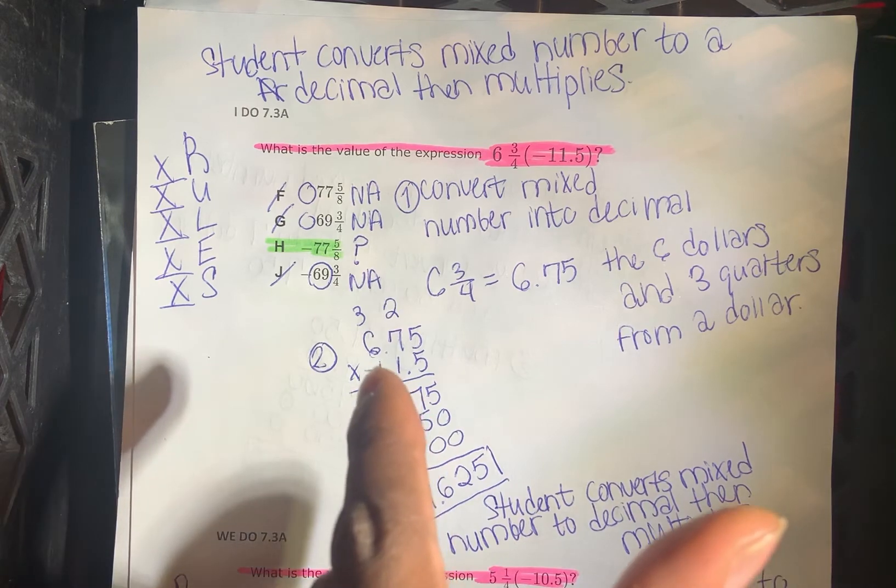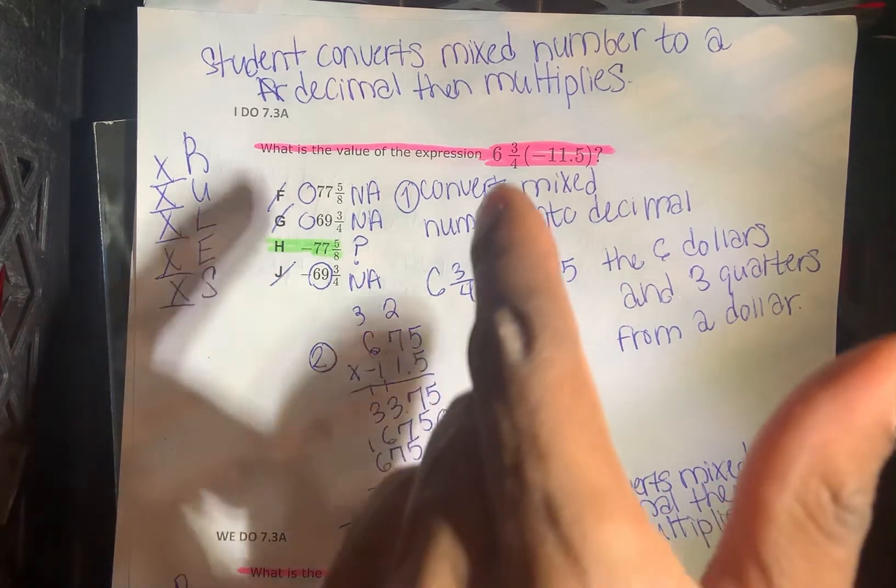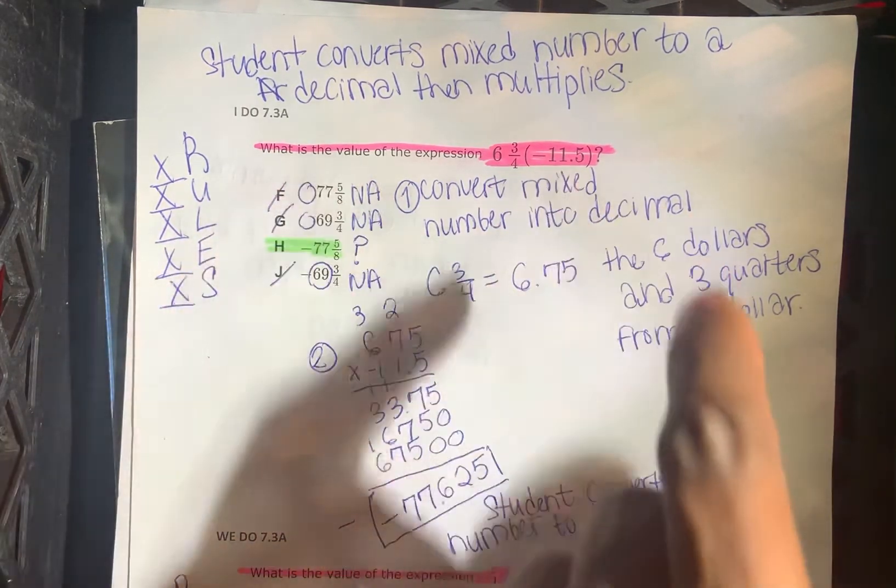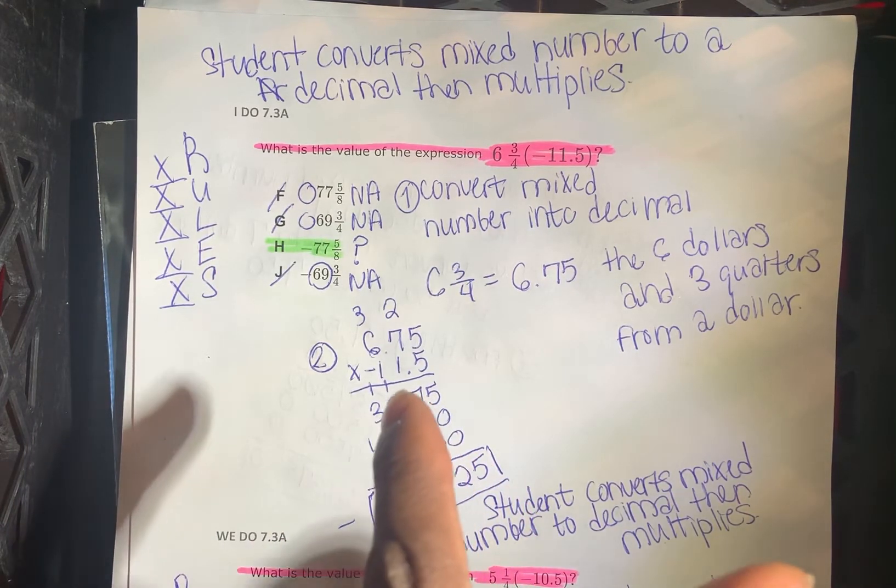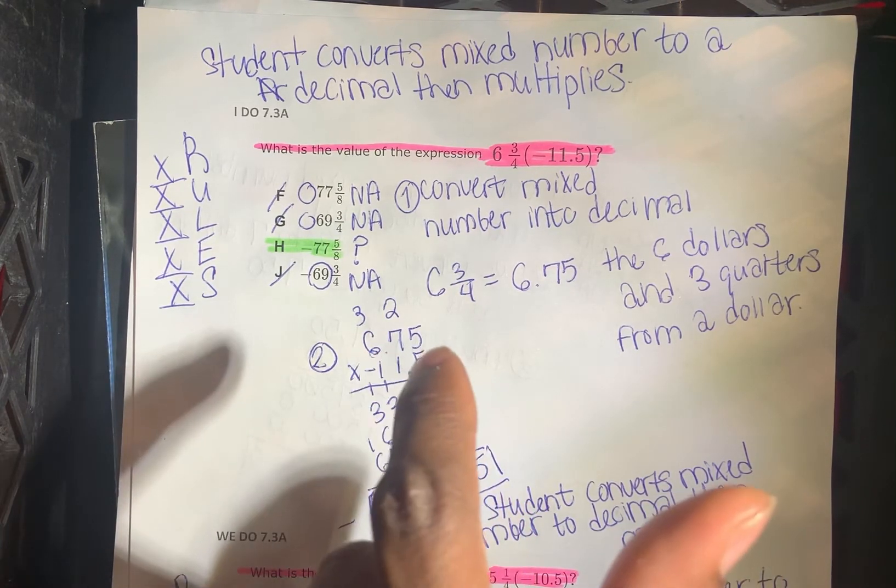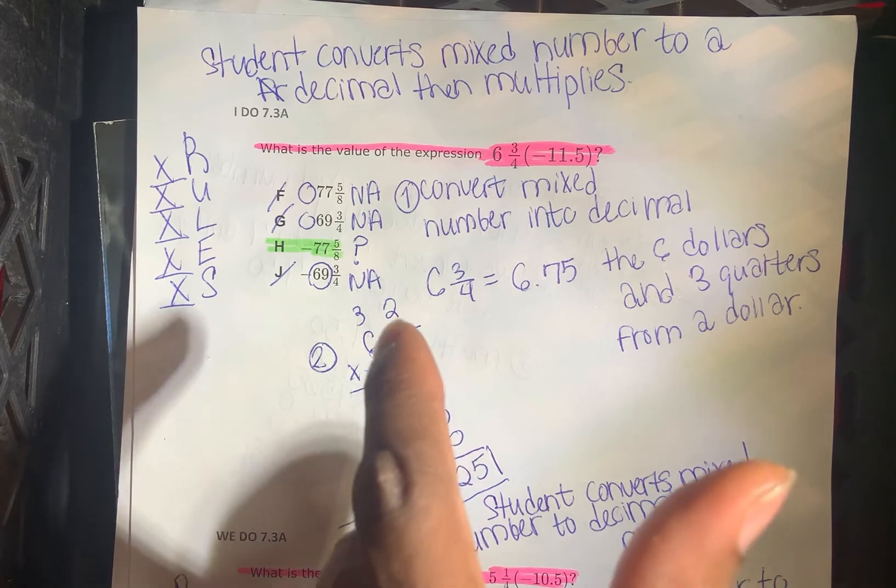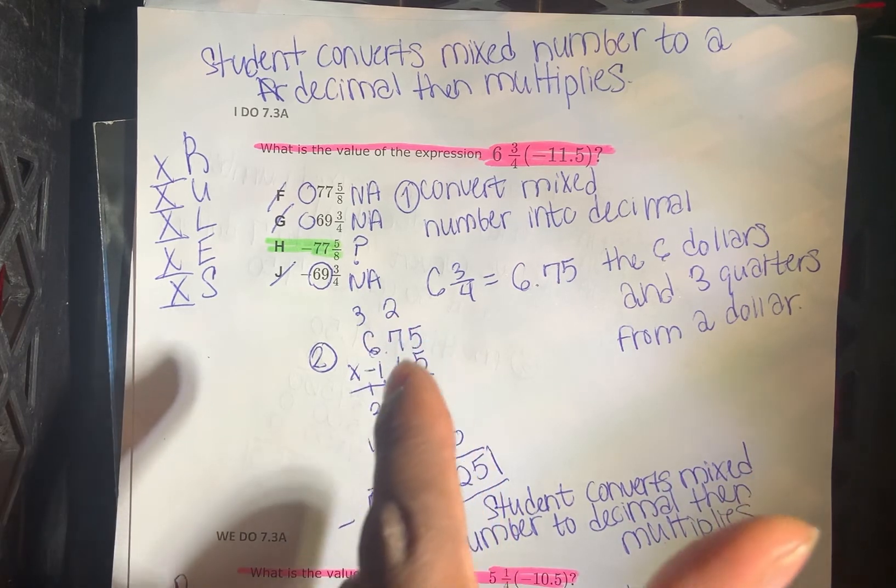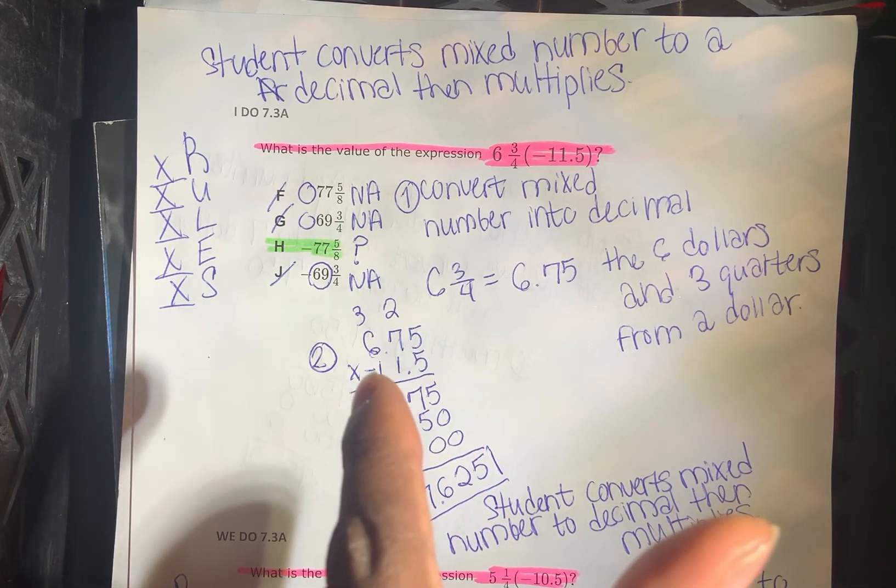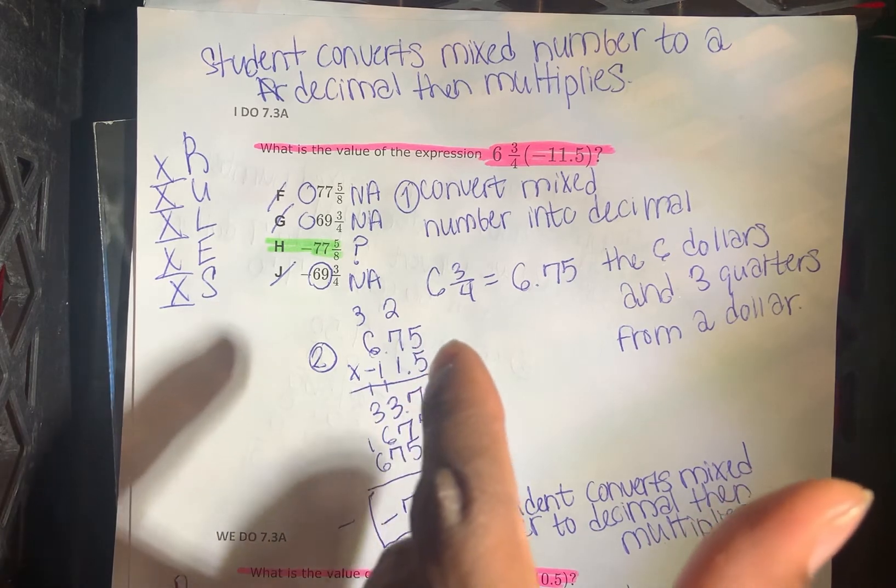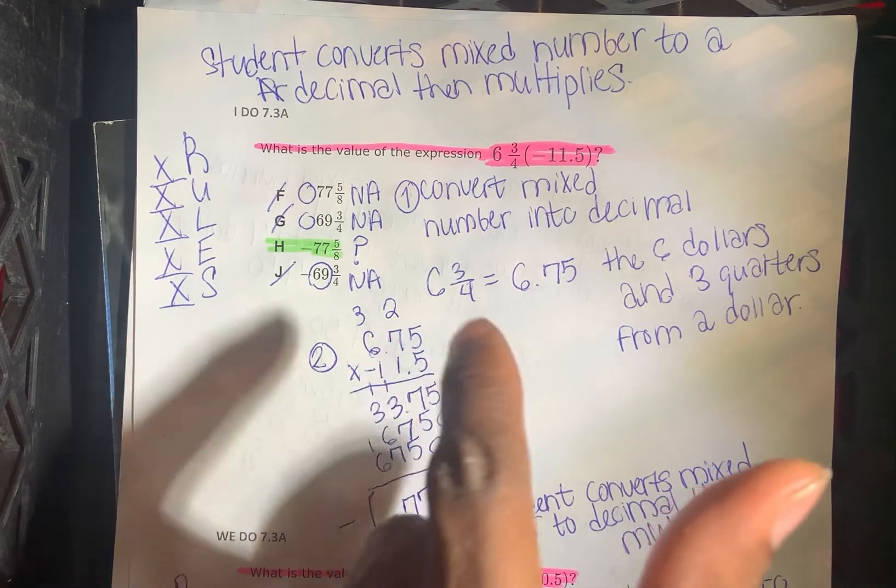Next, I multiply $6.75 by negative 11.5. I multiply from the tenth place, the ones place, and the tens place. I multiply those.